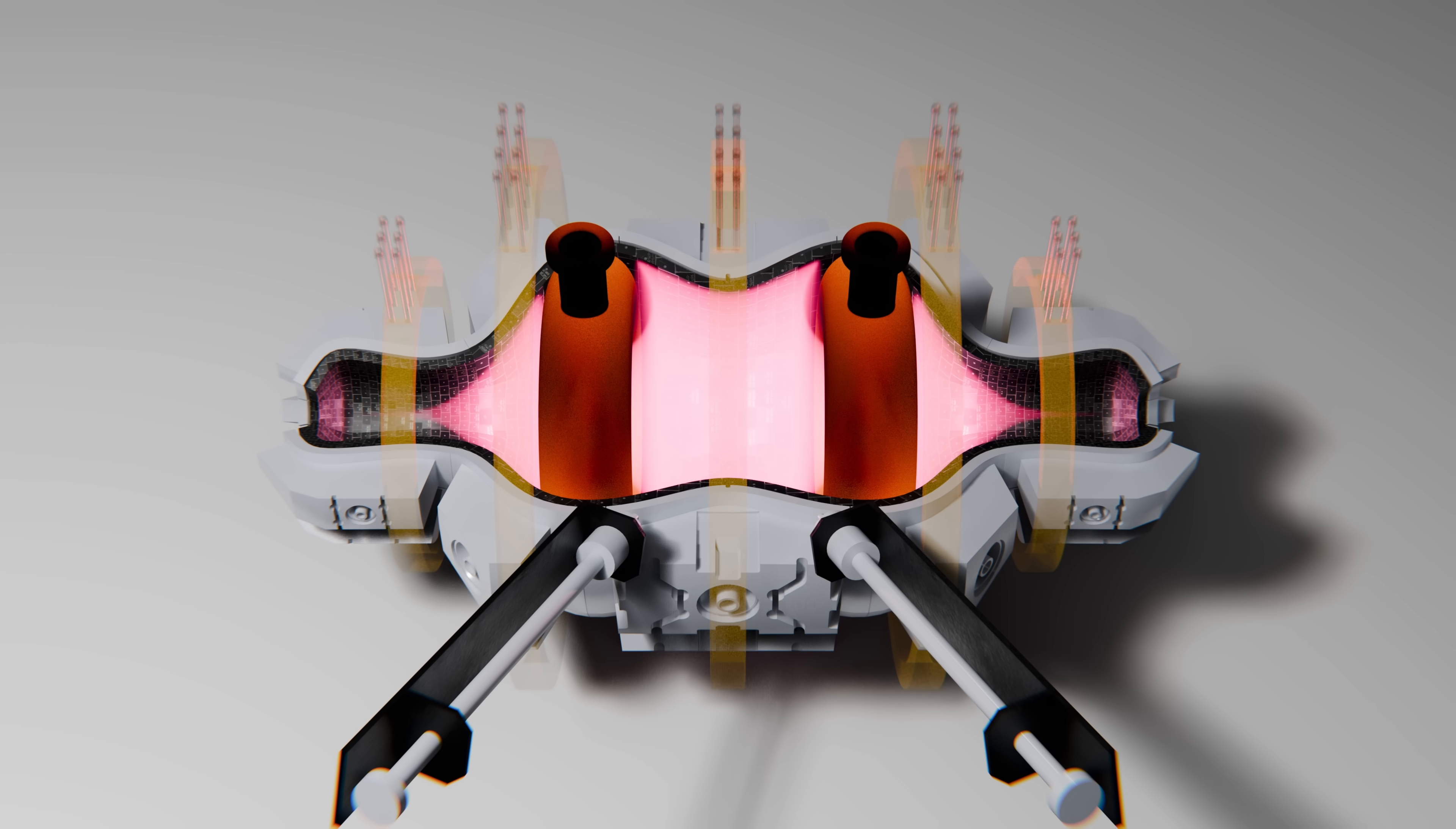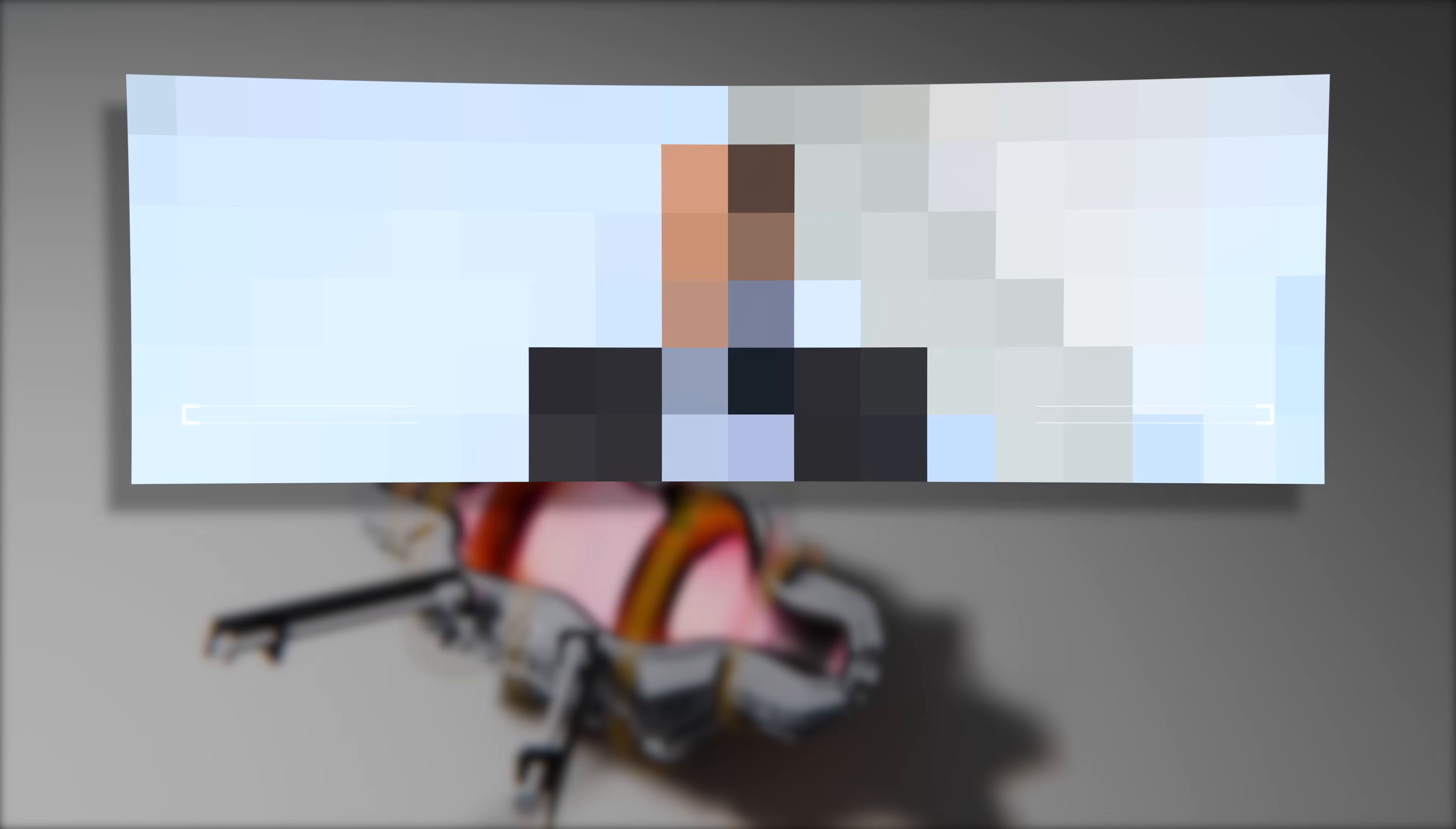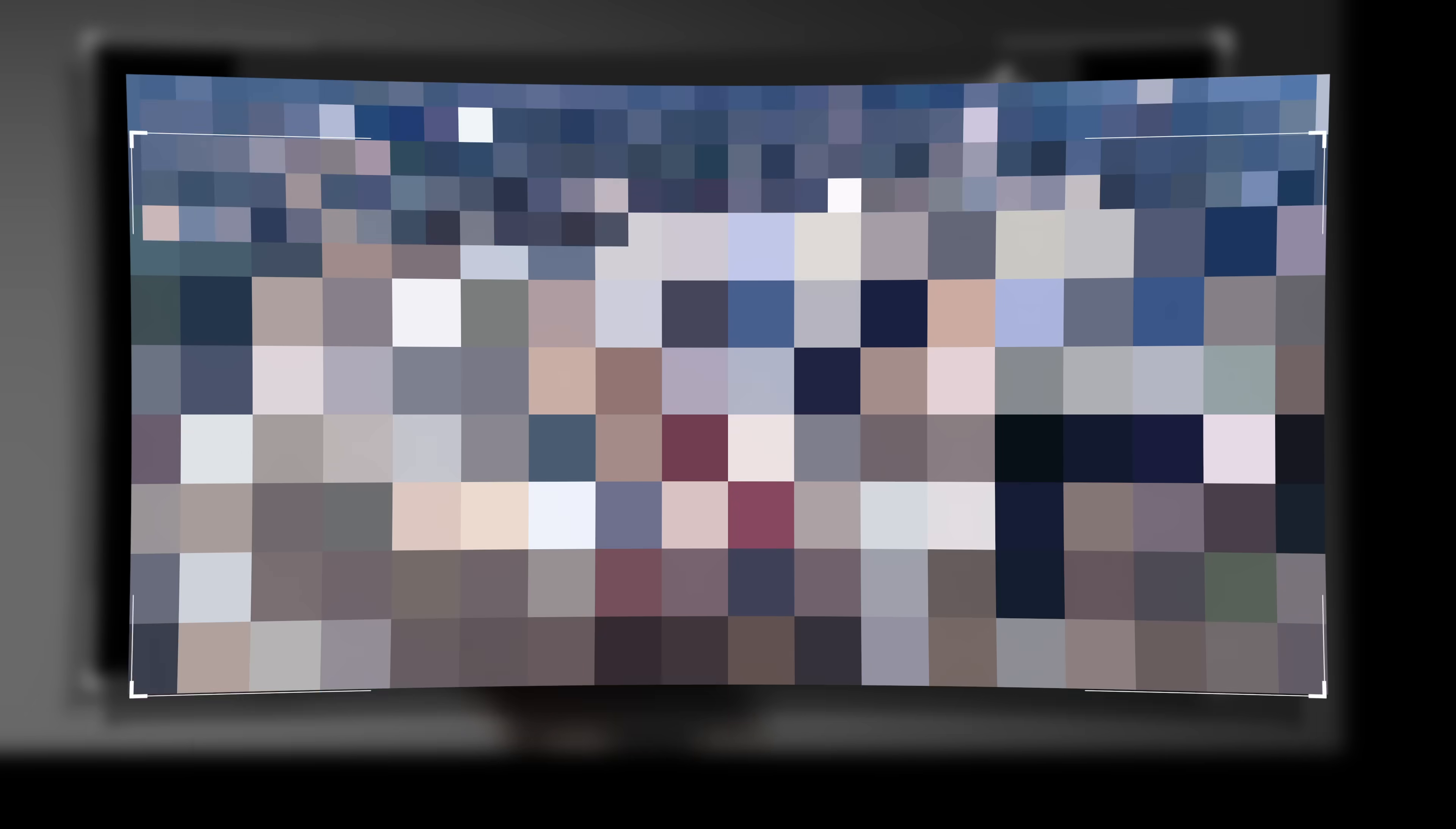If it worked, you wouldn't need enormous magnets or structures. The payoff? A fusion reactor shrunk down to the size of a semi-truck trailer, producing 100 megawatts of power, enough for a city of 80,000 people, without the need for kilometer-scale facilities like ITER.